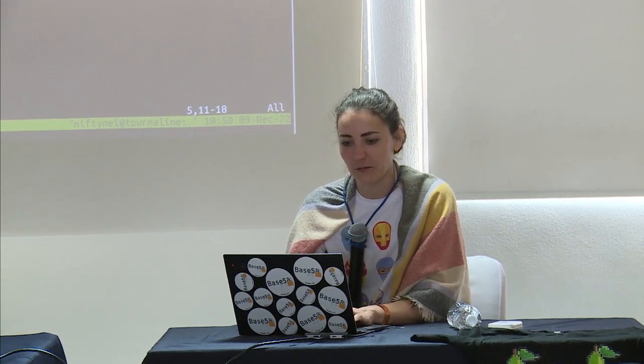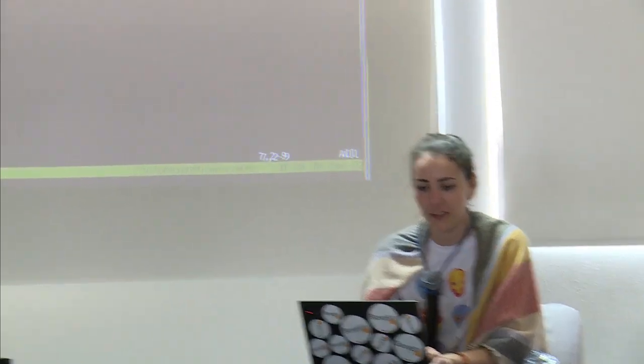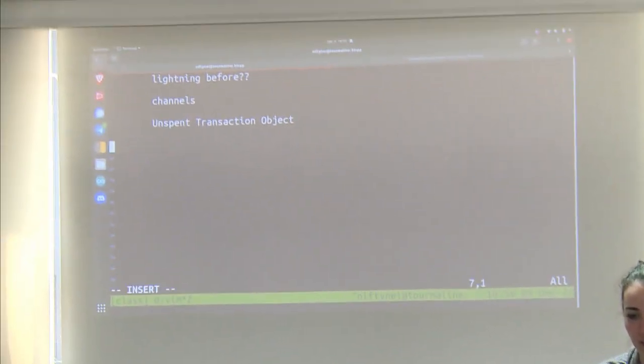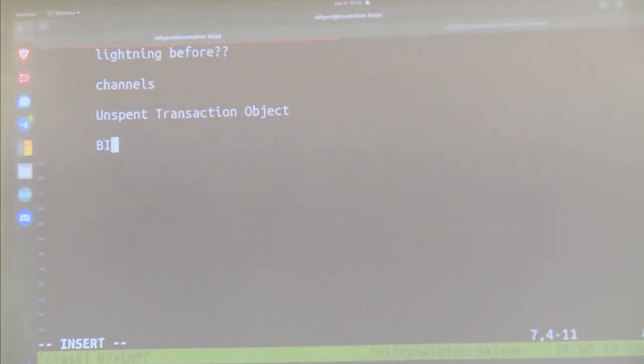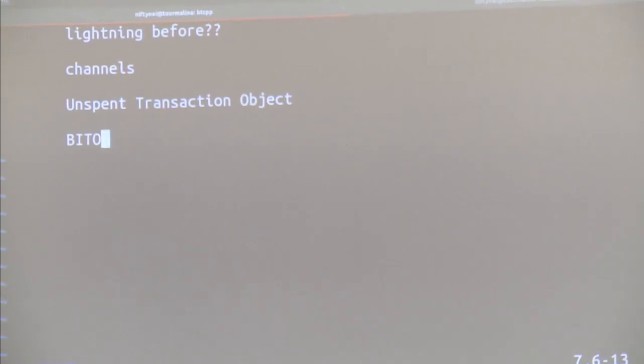A UTXO — an Unspent Transaction Output — is Bitcoin that's locked up and unspent.